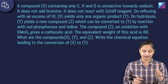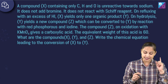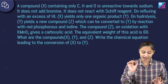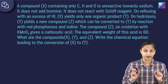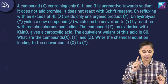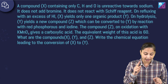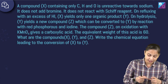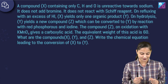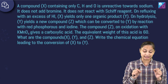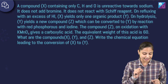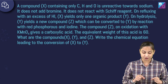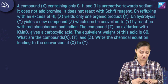The question: a compound X that contains only carbon, hydrogen and oxygen is unreactive towards sodium. It does not add bromine. It does not react with Schiff's reagent. On refluxing with an excess of HI, X yields only one organic product, that is Y. On hydrolysis, Y yields a new compound Z, which can be converted to Y by reaction with red phosphorus and iodine. Compound Z on oxidation with KMnO4 gives a carboxylic acid. The equivalent weight of this acid is 60. What are the compounds X, Y and Z? Write the chemical equations leading to the conversion of X to Y.